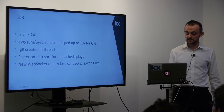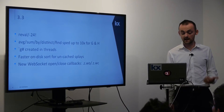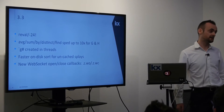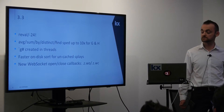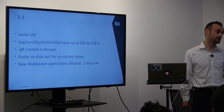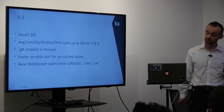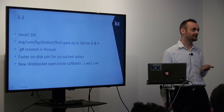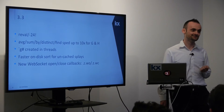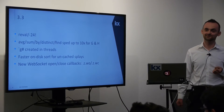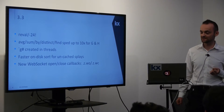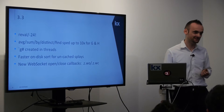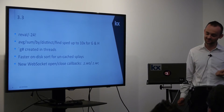The next one is `avg sum by distinct`, which is about ten times faster, specifically if you're working with G and H — so short integers. That was actually brought about by a customer here, telling us that R was better than KDB+ at that. So now KDB+ is about ten times faster for those operations.